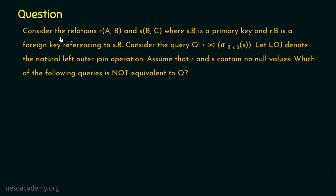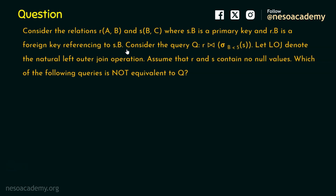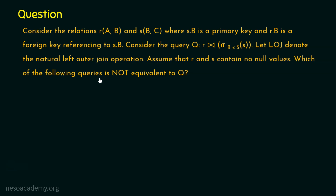The question is: consider the relations R with attributes A and B, and relation S with attributes B and C, where S.B is a primary key and R.B is a foreign key referencing S.B. Consider the query Q: R natural join sigma with the condition B less than 5 from relation S. Let LOJ denote the natural left outer join operation. Assume that R and S contain no null values. Which of the following queries is not equivalent to query Q?